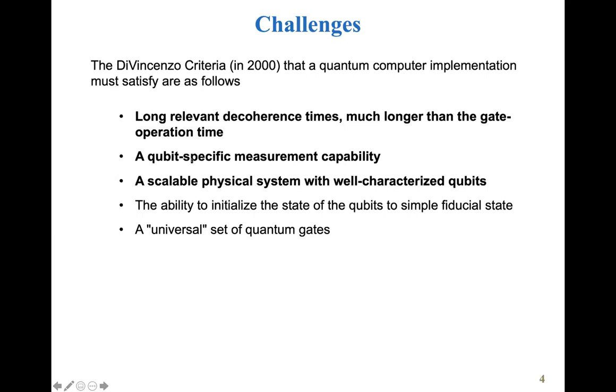The second thing here is a qubit-specific measurement capability. That really states that one has to have the capability to manipulate, to technically measure or to operate on a single qubit system. So that can be a photon, an electron, or an atom. Those are very small particles and things that we have to have very delicate techniques in order to fully manipulate those systems.